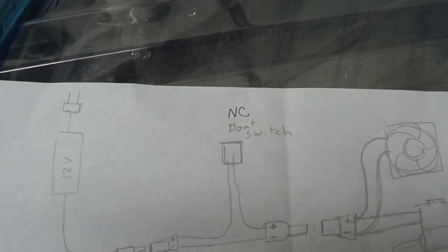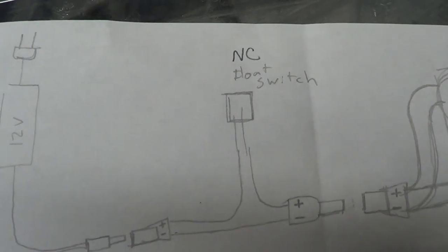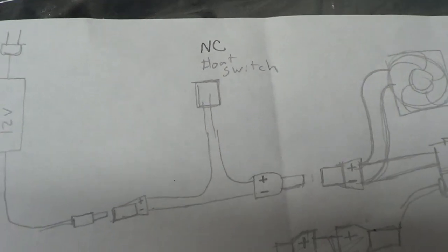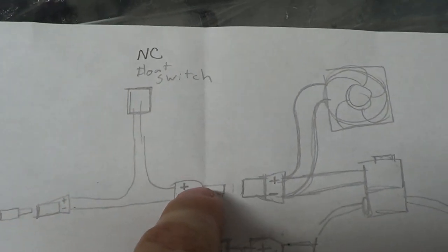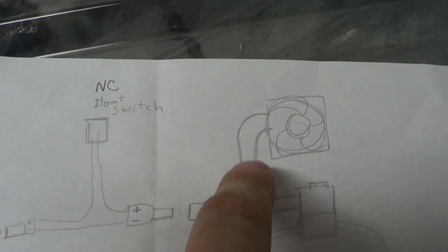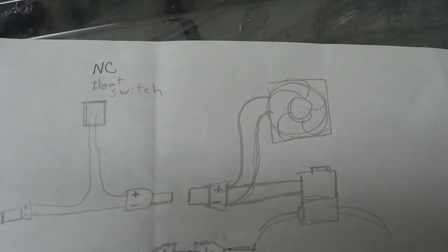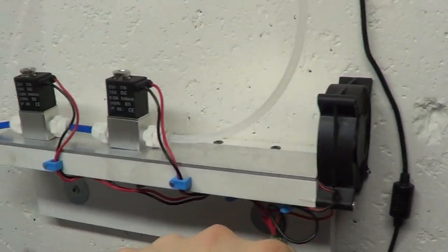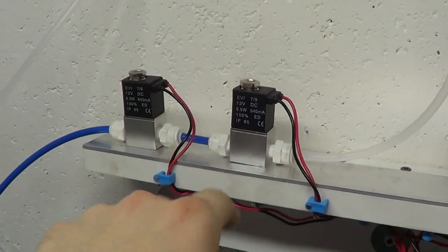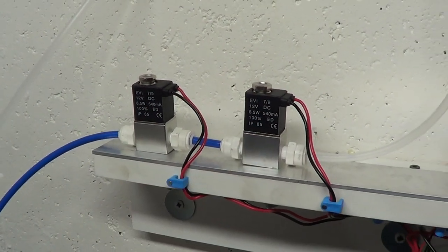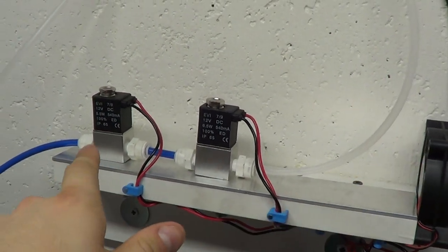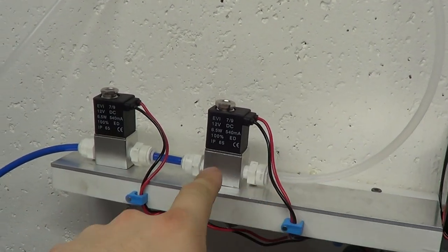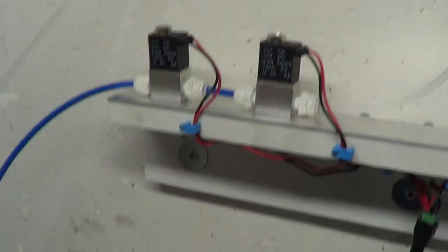From there, the power comes back out and it goes into all of our electronic parts that we're going to power. In this case, we have just a basic computer fan to blow air across and then these two solenoids. So we have three things plugged in here, and the solenoids run kind of in series here, so the water has to pass through one, pass through the other in order to drip through the tank.